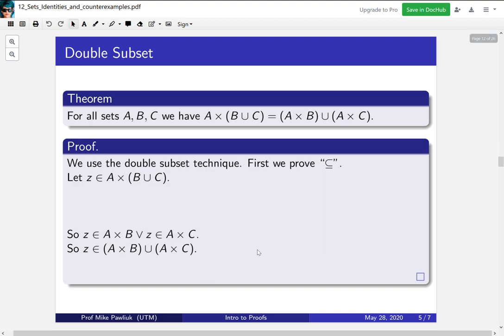So let's start to unwrap these definitions. If z was going to be in the union, z would either have to be in the first set or in the second set. Now let's unwind the definition of what Cartesian product means. If you're in the Cartesian product, it means that you are a pair, z = (x, y), where x is from the first part and y is from the second set. So we know that x ∈ A and y ∈ B ∪ C, and z equals the ordered pair (x, y).